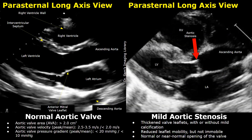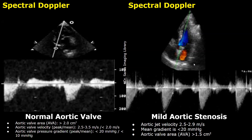In mild aortic stenosis, you may see either a normal aortic valve or thickened, calcified hyperechoic valve leaflets on echocardiography. In real-time imaging, the valves may move slower than normal. Spectral Doppler is very useful in classifying aortic stenosis into mild, moderate, and severe. The main spectral Doppler parameters to note are aortic jet velocity, mean gradient, and aortic valve area. In mild stenosis, the jet velocity is between 2.5 and 2.9 m/s, the mean gradient is less than 20 mmHg, and the aortic valve area is greater than 1.5 cm².